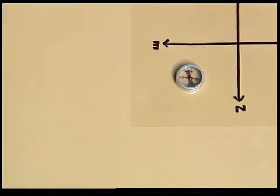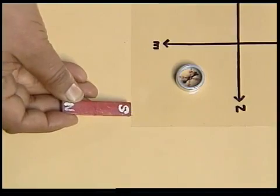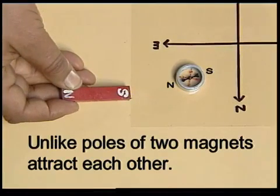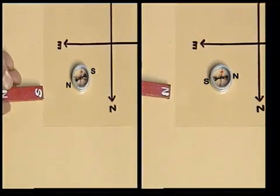On the other hand, when we bring the south pole of the magnet near the tip, the tip moves closer. So we can say that when two magnets are brought close to each other, a force of attraction or repulsion acts between them.